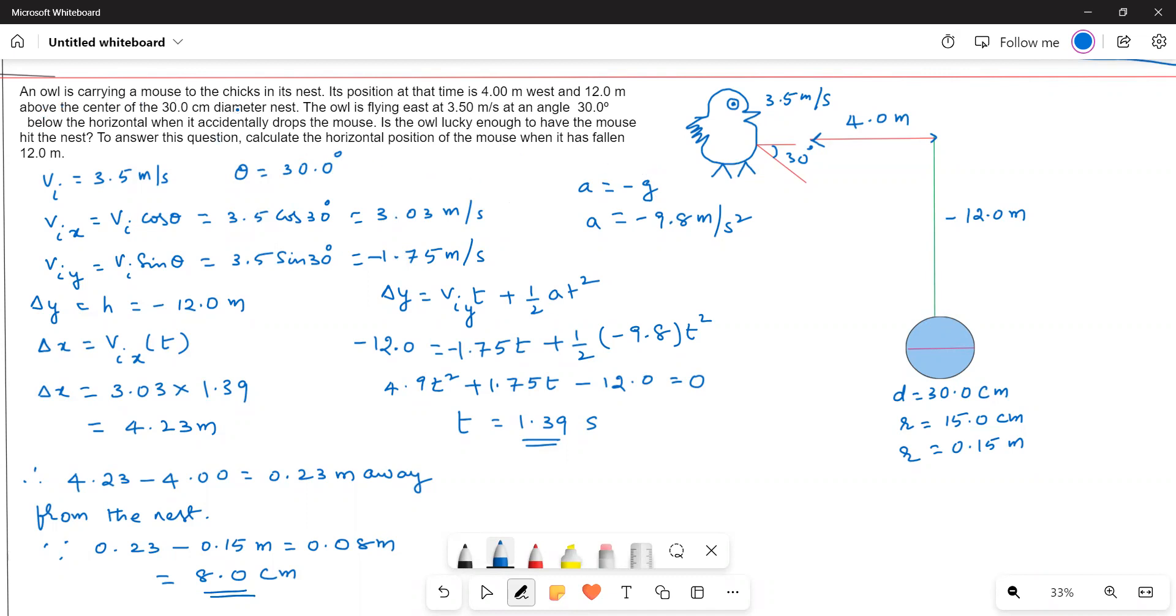An owl is carrying a mouse to the chicks in its nest. Its position at that time is 4 meters west and 12 meters above the center of a 30 centimeter diameter nest.